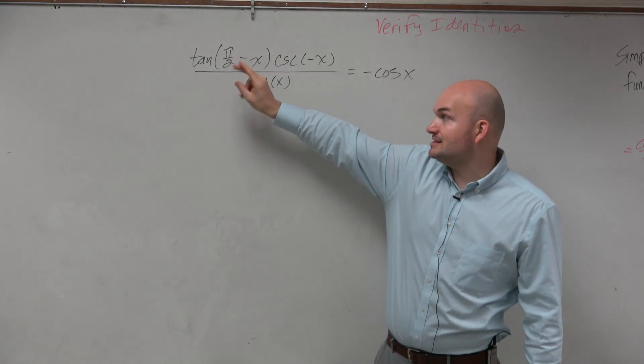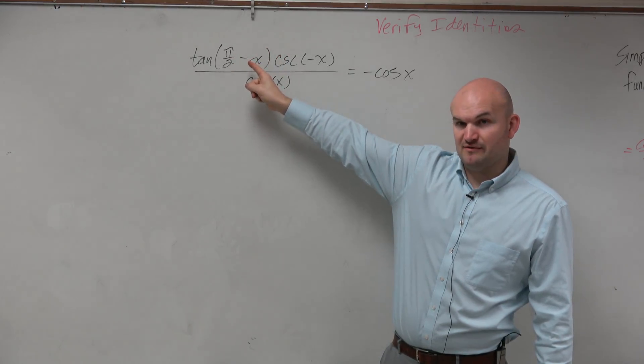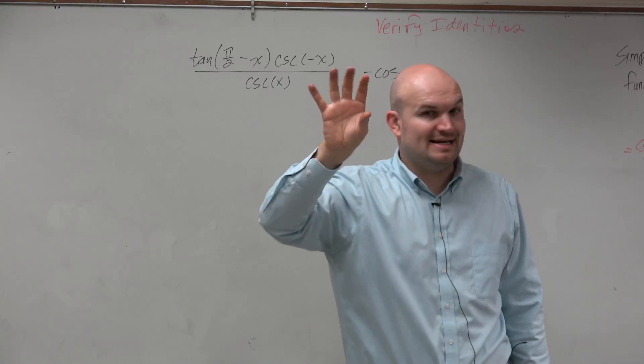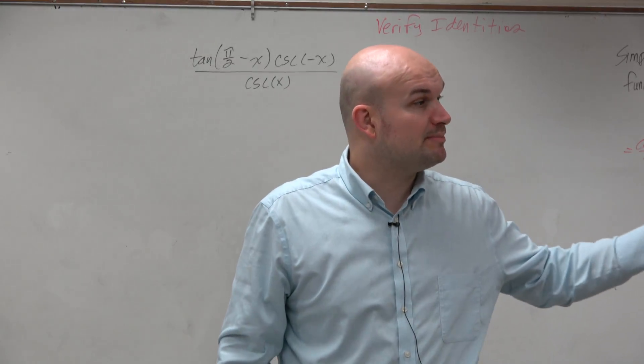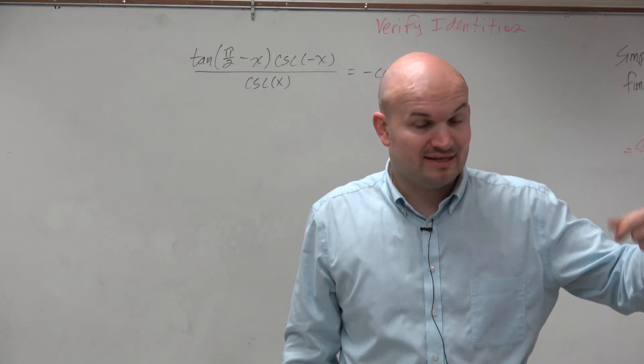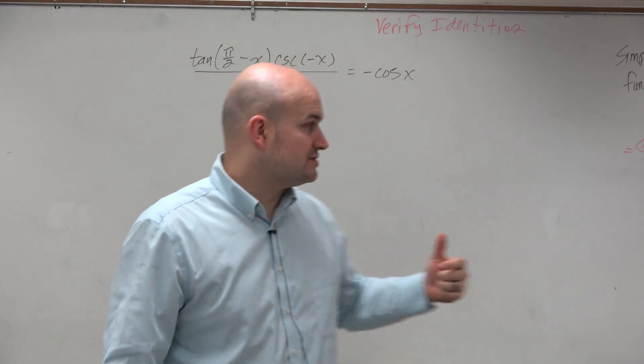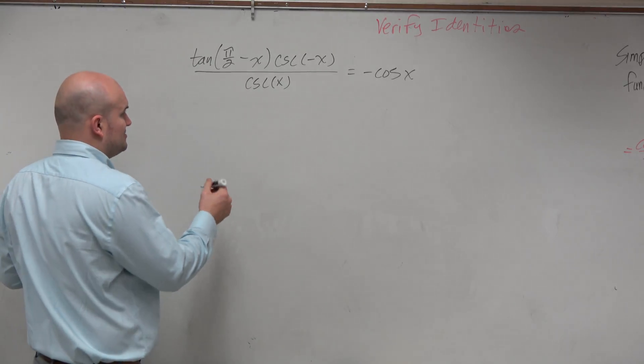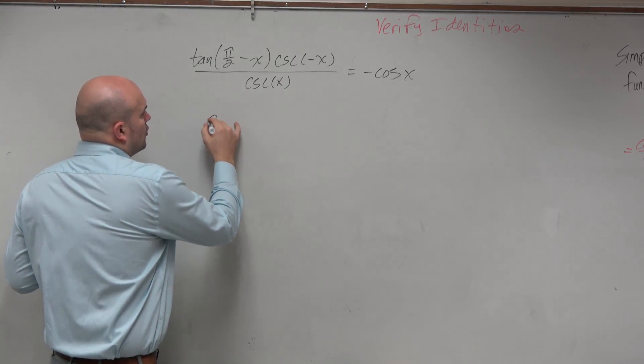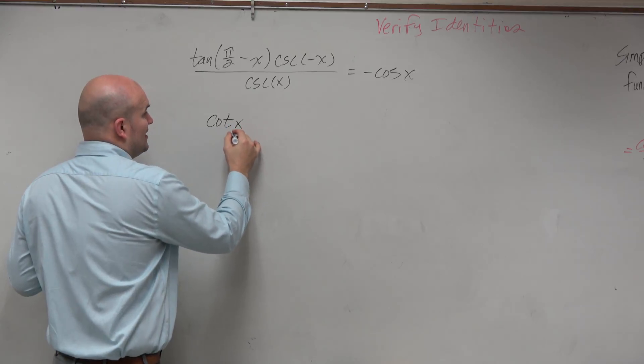So a couple of things. I see this co-function identity here. Whenever you guys see pi halves minus x or 90 minus x, immediately think of your co-function identities. They are not going to be provided to you on the EOC, but it is something you guys should know. So we know that tangent of pi halves minus x is going to be equal to cotangent of x.